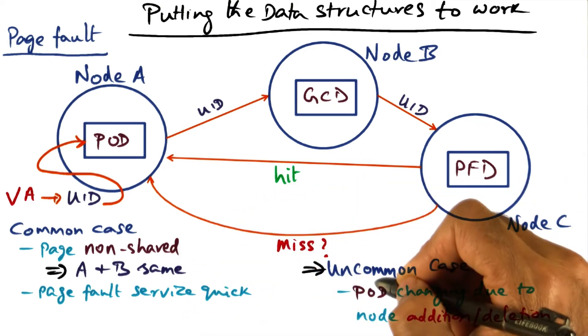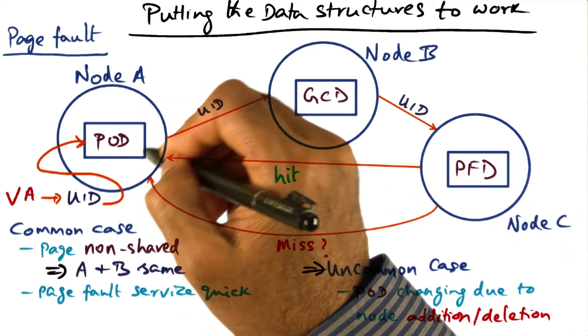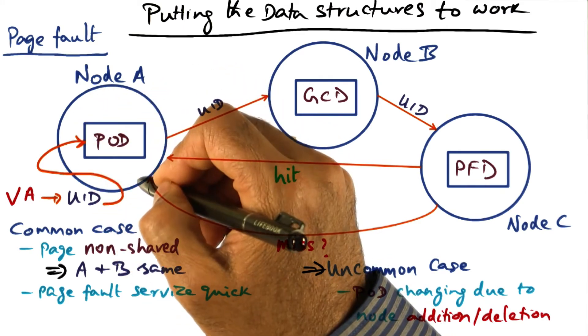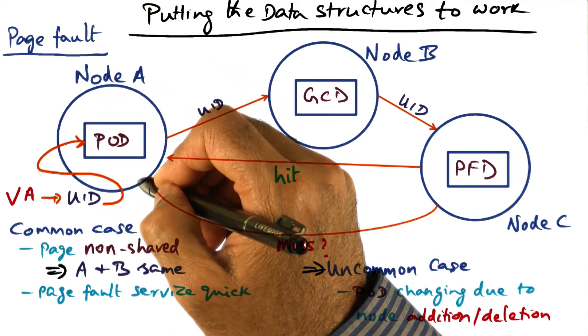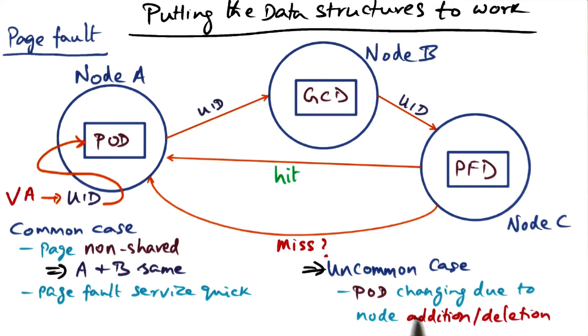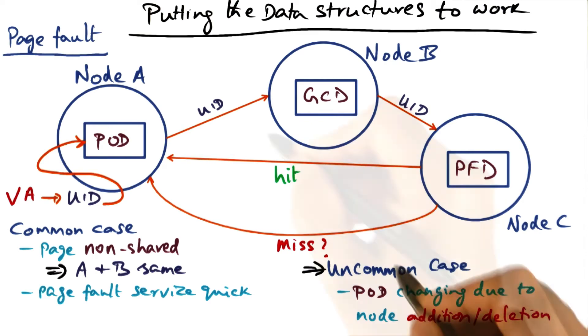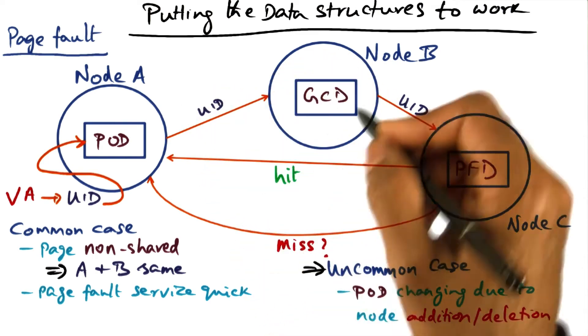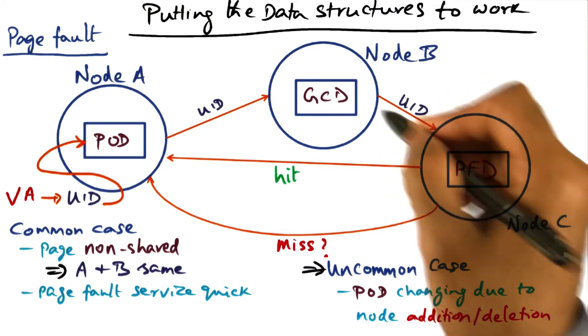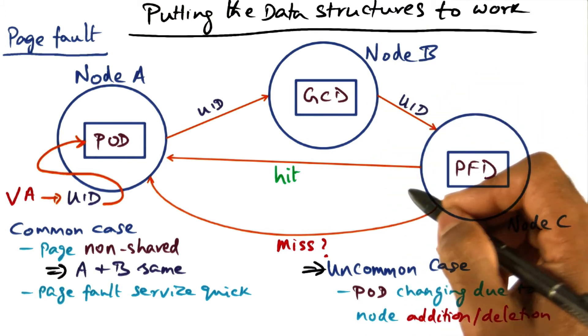Second possibility is the uncommon case that the POD information that I had is stale. When can that happen? That is when the POD is being recomputed for the local area network as a whole, either because there are new additions or new deletions of nodes, and therefore we are recomputing the redistribution of the UID space and deciding which node is responsible for which UID.